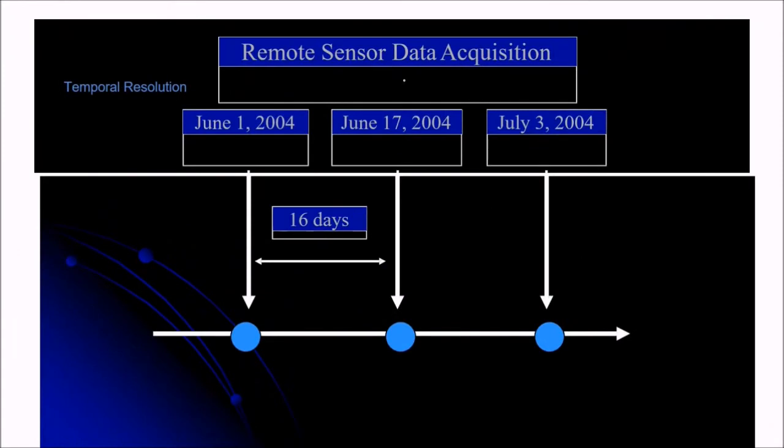So remote sensor data acquisition. This we are talking in terms of temporal resolution. Say we took some data here in the second time, the third time. So the frequency of data taking or sensing, say it is 16 days. So this is the temporal resolution. Temporal means time.